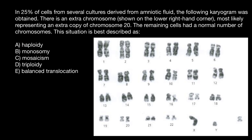Variant A: haploidy. Haploidy means that the normal number of chromosomes in the organism is two for each chromosome, and haploidy would be when we have only one chromosome for each pair. We can get such a situation when talking about gametes — female gametes would be egg cells, and in each we will find only one chromosome from each pair.